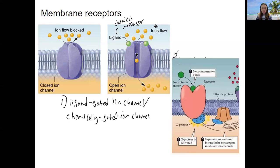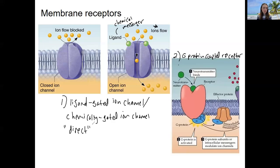Membrane receptor type two is a G-protein coupled receptor. This is a type of signaling that is less direct — it is indirect. When this neurotransmitter or hormone binds to the protein receptor, it causes stuff inside the cell to be activated. The G-protein coupled receptor is not an ion channel itself; it's going to cause indirect effects.